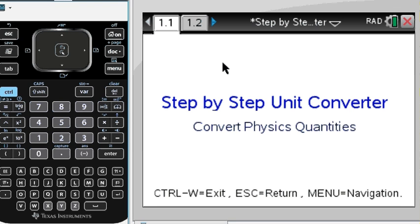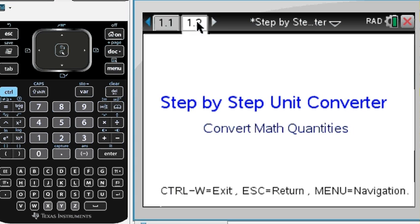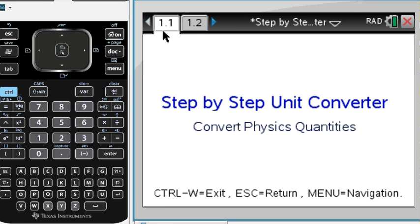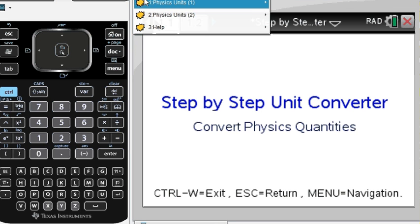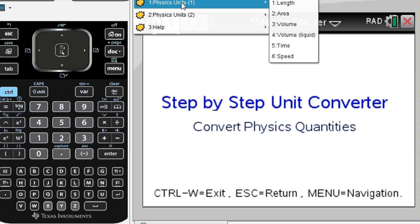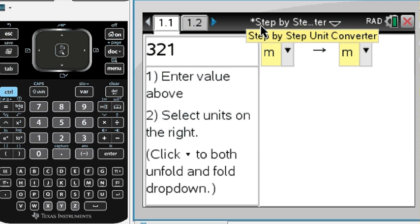Hello guys, I would like to show you how to use a step-by-step unit converter which converts popular physics quantities as well as math and chemistry and engineering quantities. So let me show you how this works. There's two tabs here, 1.1 and 1.2. Tab 1.1 is used for physics units to be converted.